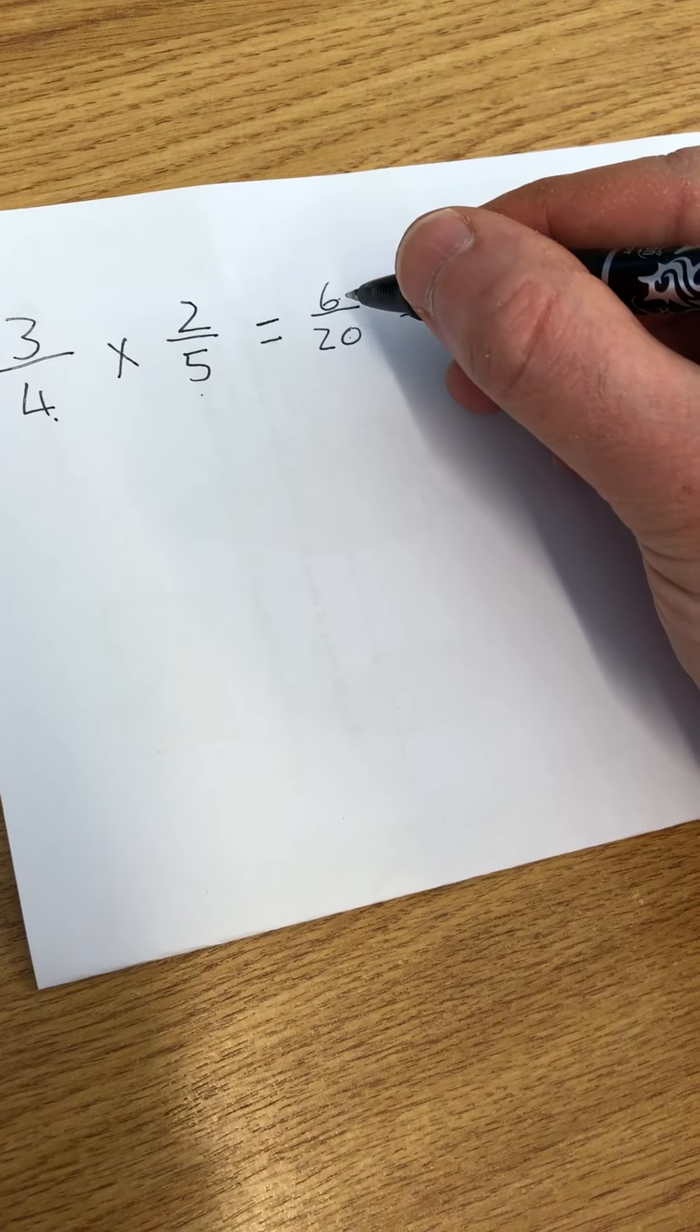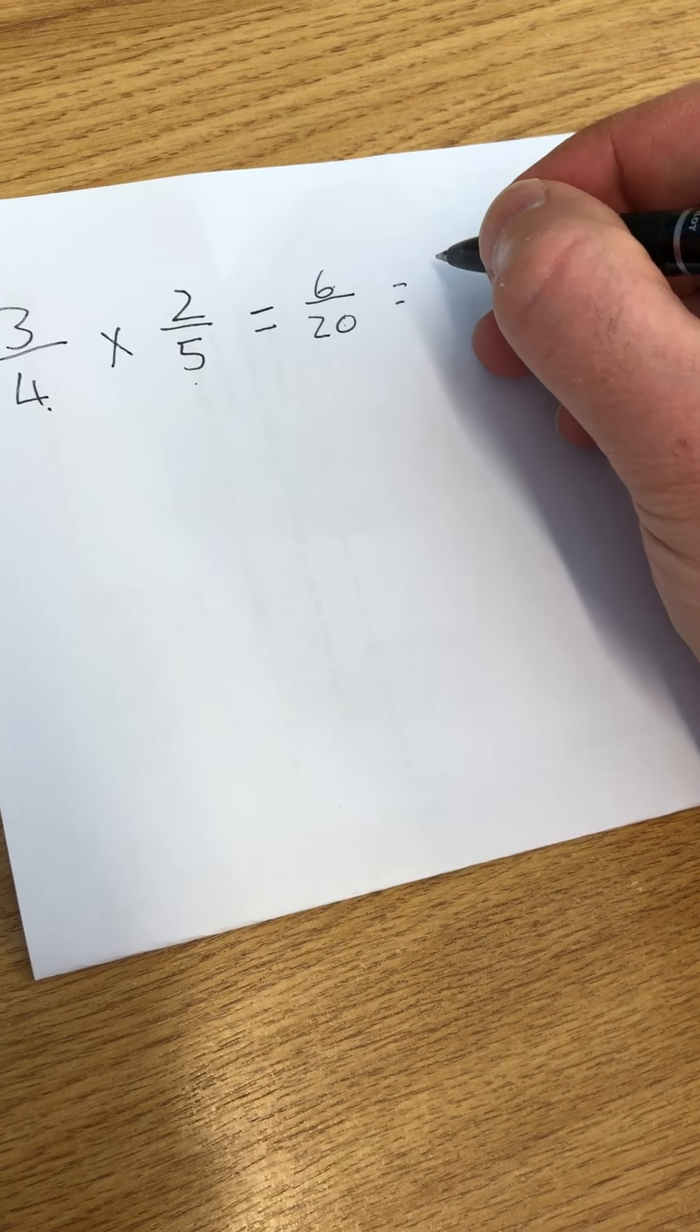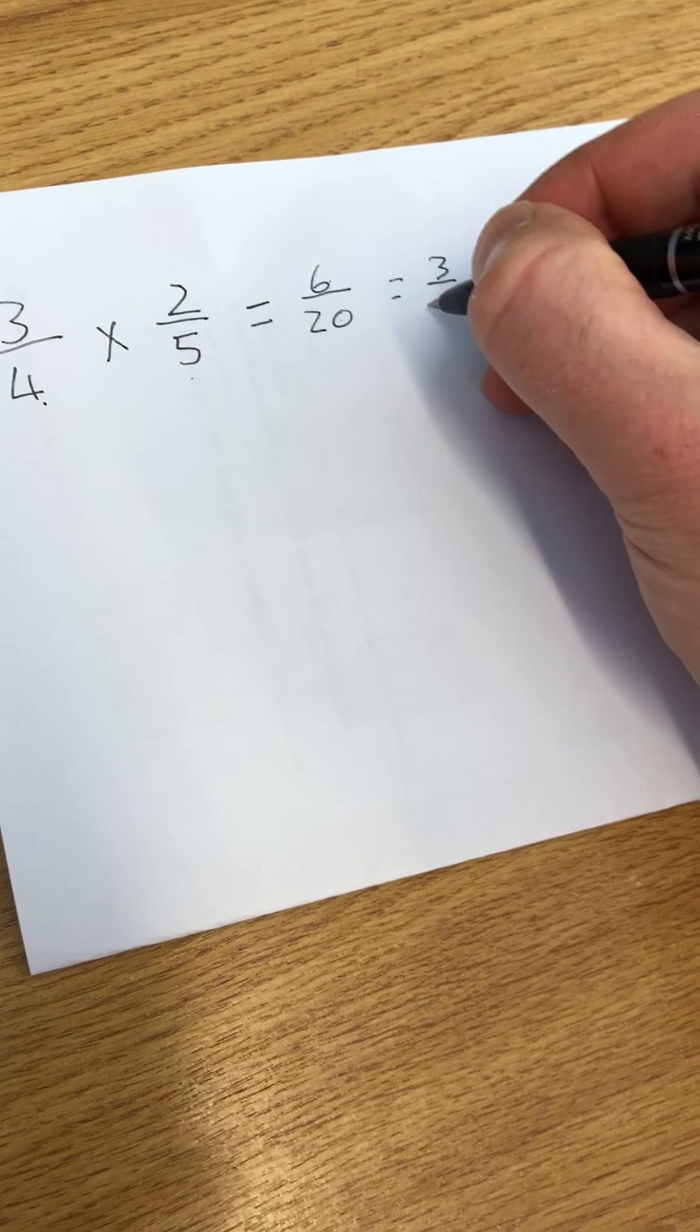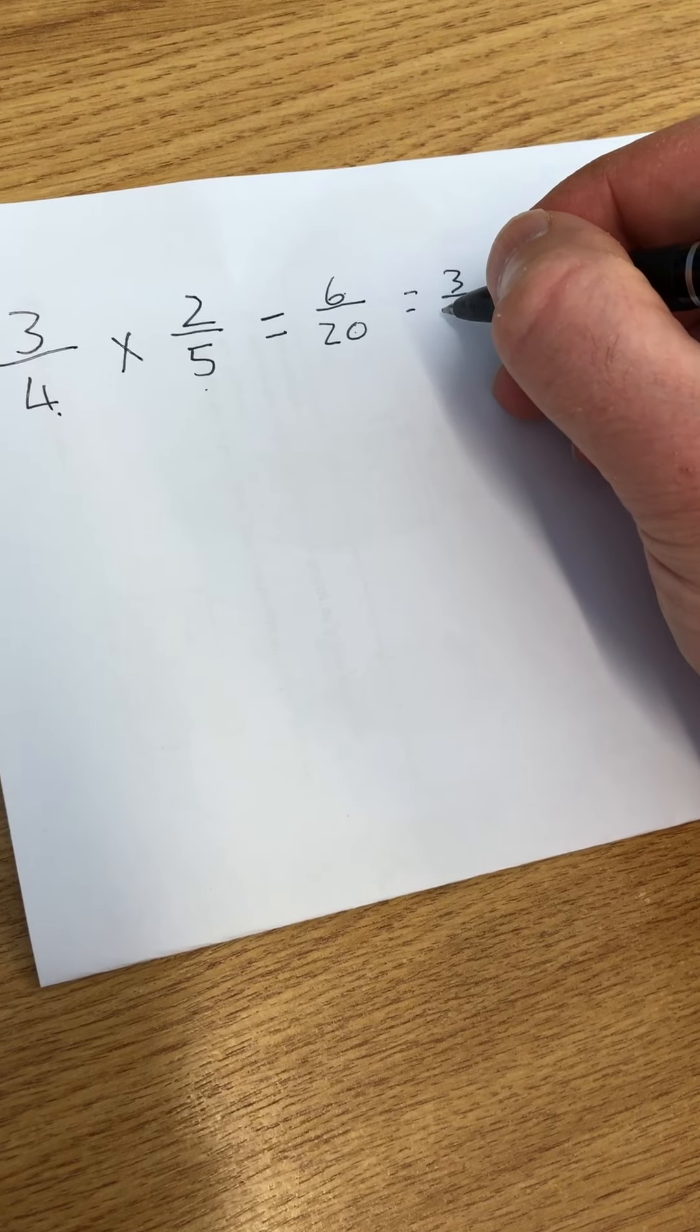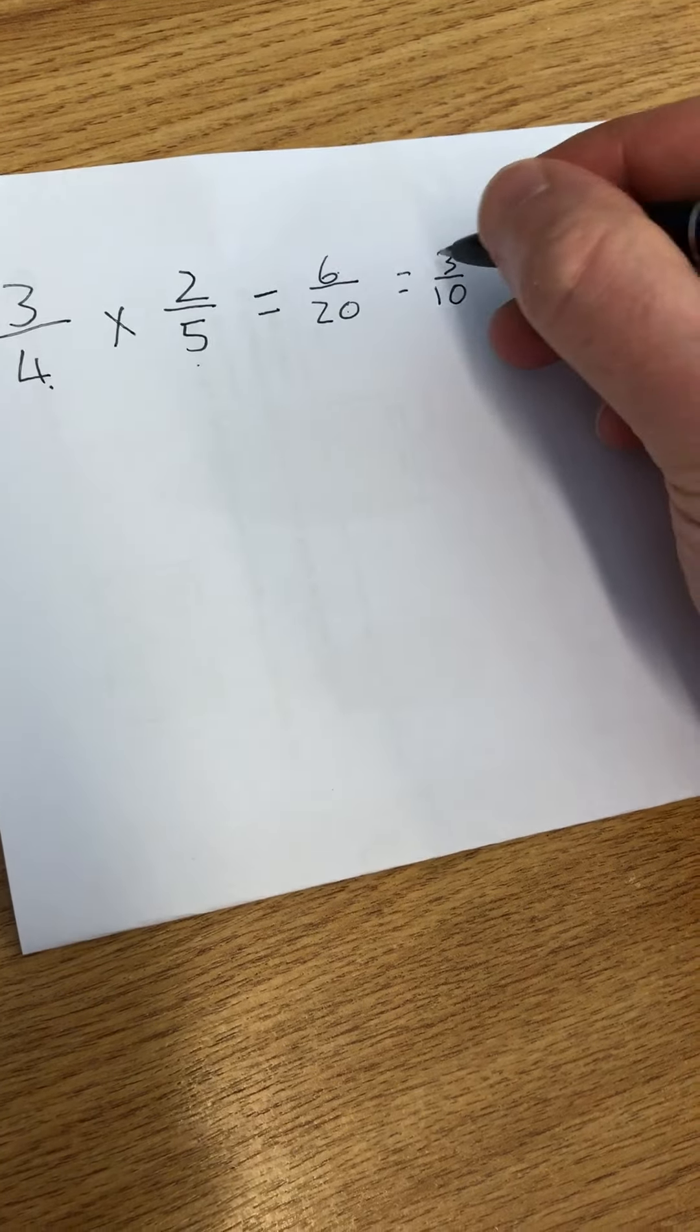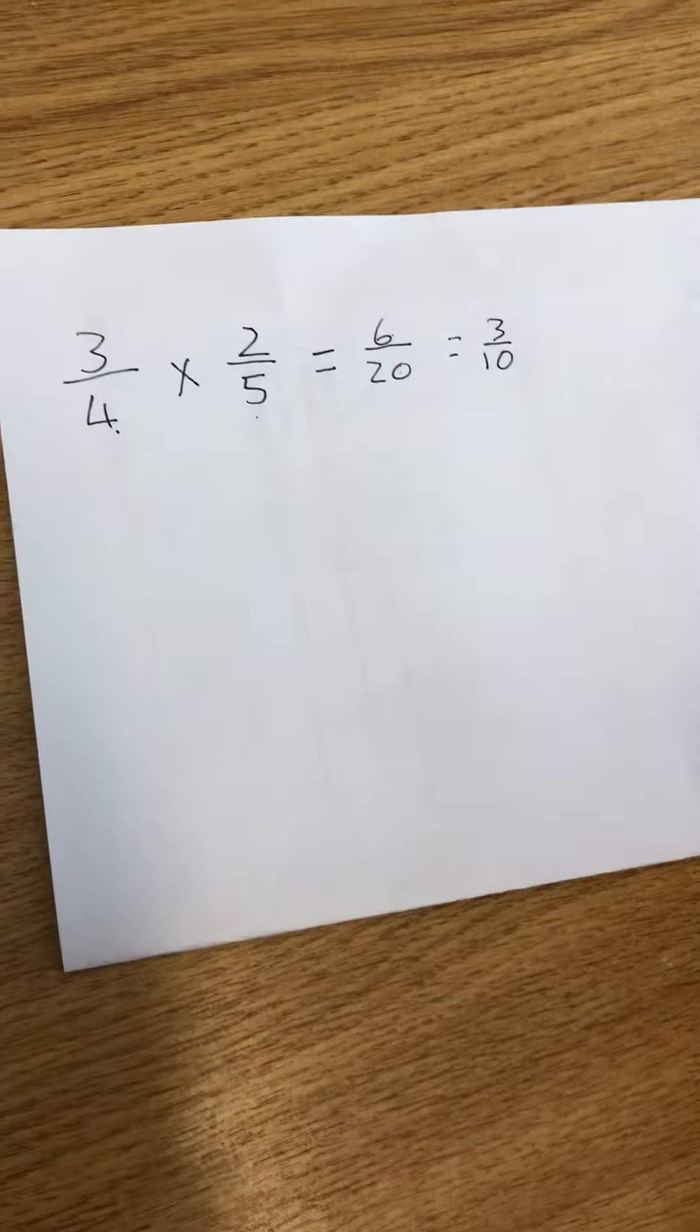So 6 divided by 2 is 3, and 20 divided by 2 equals 10, 3 tenths. OK, have a go yourself.